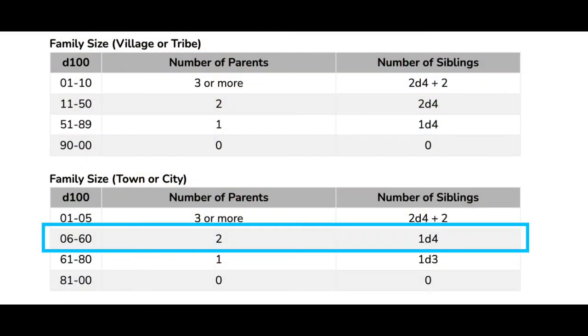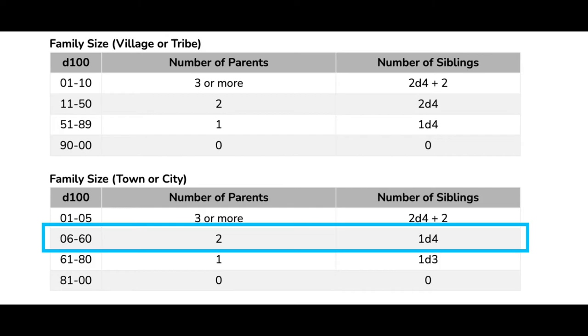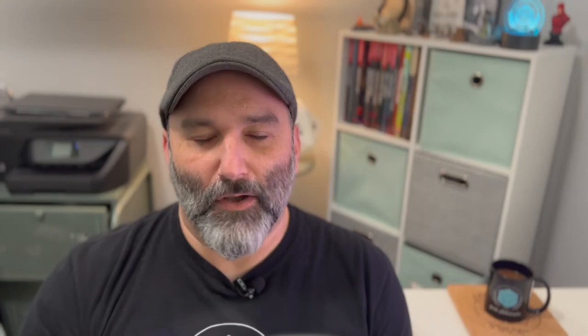Now it's time to talk about the size of Ezra's family. Family size is tied to the type of home settlement — Jansen's Crest is a town, so I'll use the associated table. I rolled the percentile dice and got a 34, which means the Wright family has two parents and one d4 siblings. I rolled a one on the d4, so Ezra has one sibling, and I can decide who that is later. Quick note: if you're hunting for a die with three sides, just roll a d6 — 1-2 is a 1, 3-4 is a 2, and 5-6 is a 3.